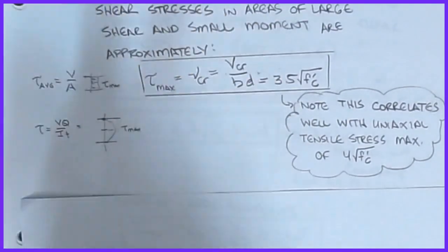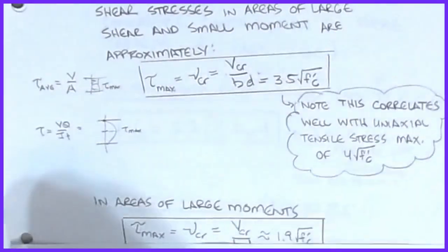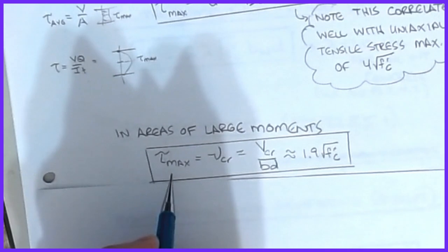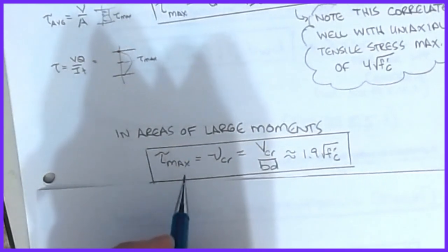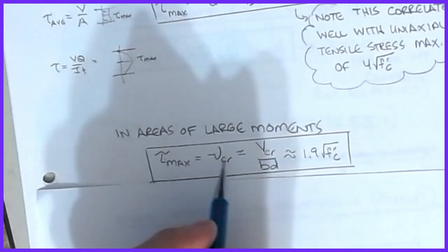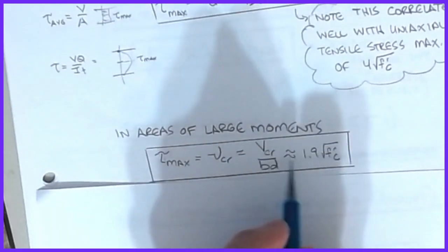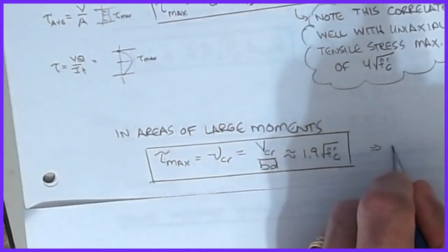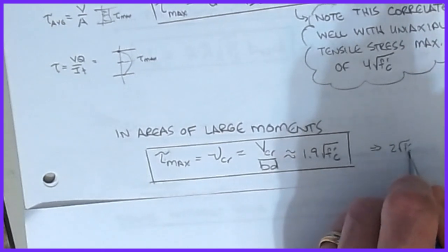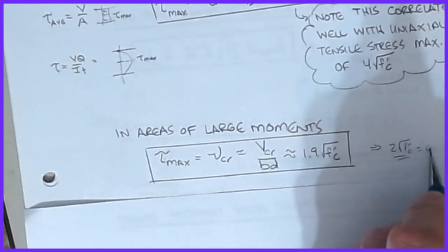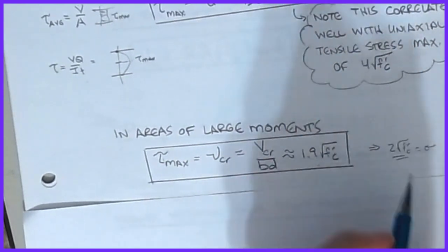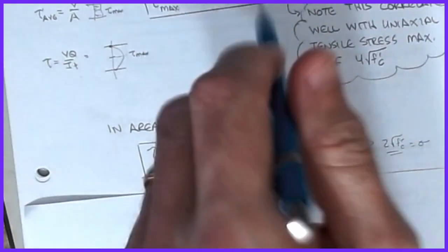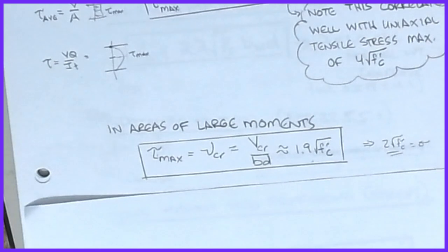In areas of large moments, the critical shear stress VCR over BwD is around 1.9√f'c. In ACI you'll start seeing the number 2√f'c in many calculations for stress — that's a direct correlation back to this experimental result. They let you overestimate slightly and handle it with safety and reduction factors, so these formulas come back to basic mechanics approaches.